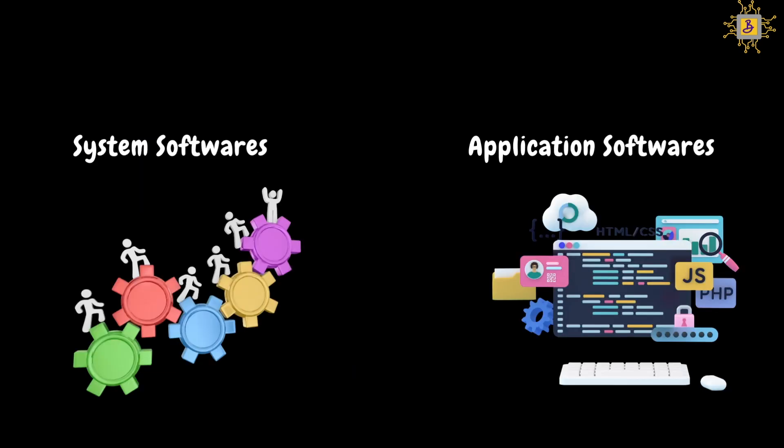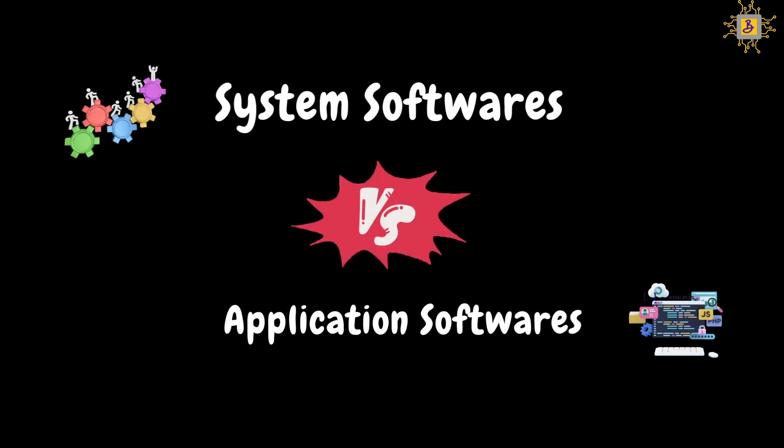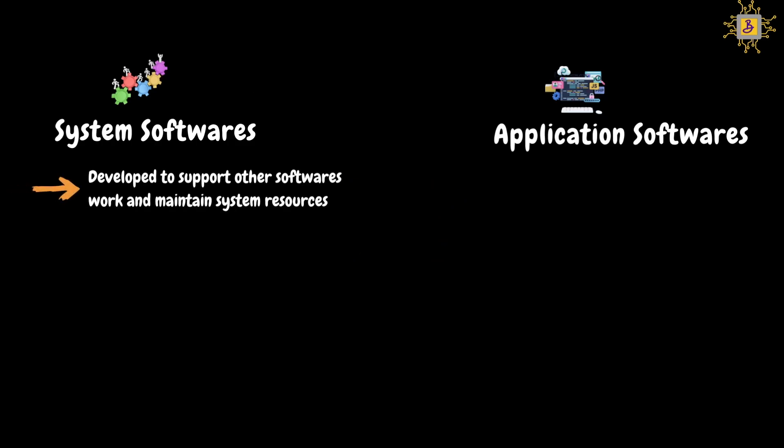Now if you have a clear idea, let's quickly look at the differences between system software and application software. System software is designed to support various companies and helps maintain the overall system. Application software is developed for a specific task — for example, calculator software handles mathematical calculations.